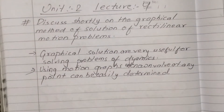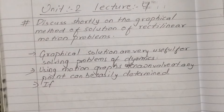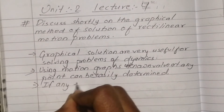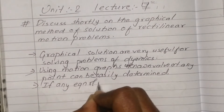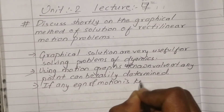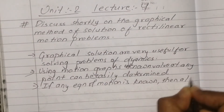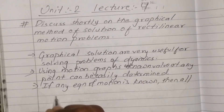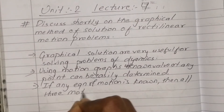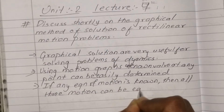Point number three: if any equation of motion is known, then all other motion quantities can be easily determined from it.